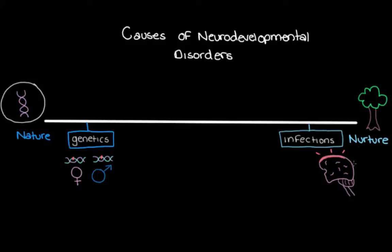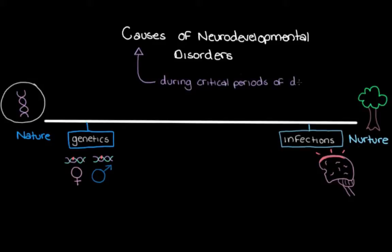You might be thinking: if she had meningitis, and if infections like meningitis can cause neurodevelopmental disorders, does that mean she has a neurodevelopmental disorder? That's a really good question and brings us to a really important point. All of these different events, in order to result in a neurodevelopmental disorder, need to occur during the critical periods of development — while the fetus is developing during pregnancy, during the actual birthing process, or shortly after birth within the first few months to years of life.